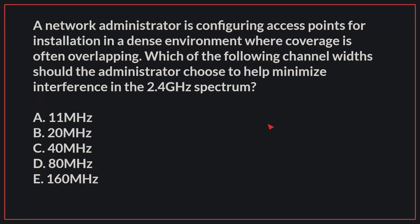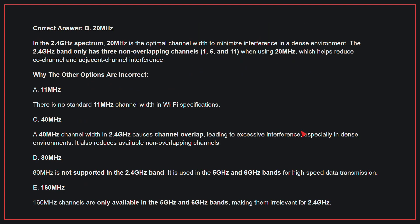A network administrator is configuring access points for installation in a dense environment where coverage is often overlapping. Which of the following channel widths would the administrator choose to help minimize interference in the 2.4GHz spectrum? The correct answer is B: 20MHz. In the 2.4GHz spectrum, 20MHz is the optimal channel width to minimize interference in a dense environment. The 2.4GHz band only has three non-overlapping channels — 1, 6, and 11 — when using 20MHz, which helps reduce co-channel and adjacent channel interference.